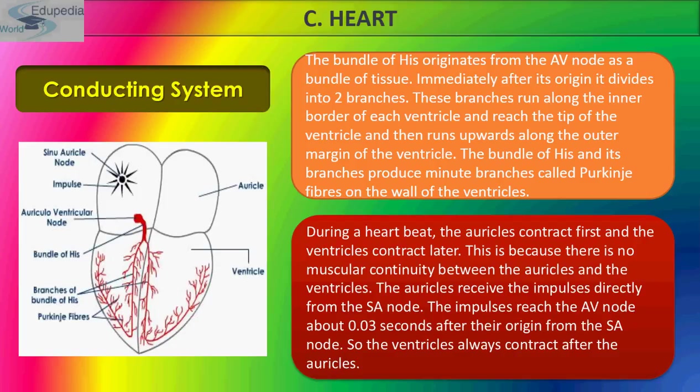The auricles receive the impulse directly from the SA node, since the SA node is situated in the auricle. The impulse reaches the AV node about 0.03 seconds after its origin from the SA node, and so the ventricles always contract after the auricles.